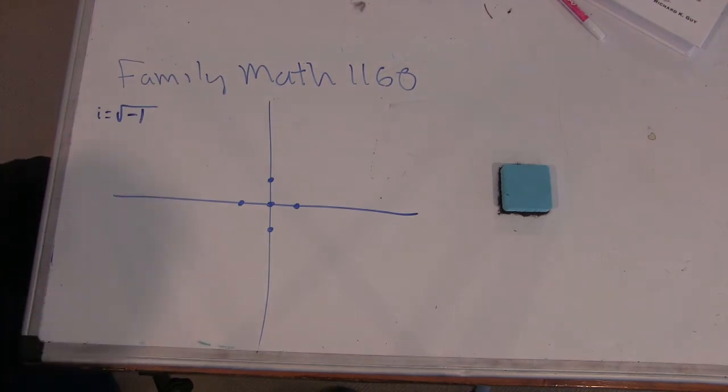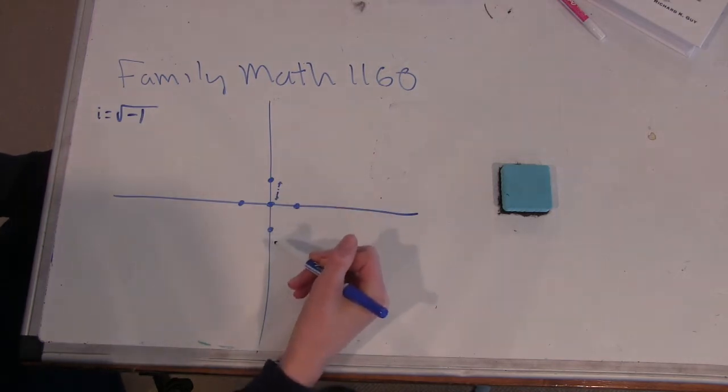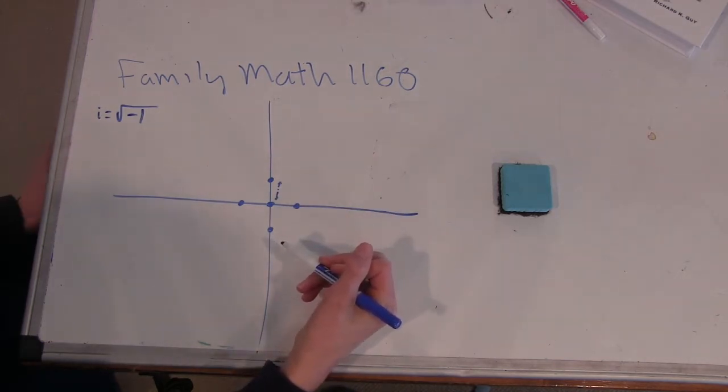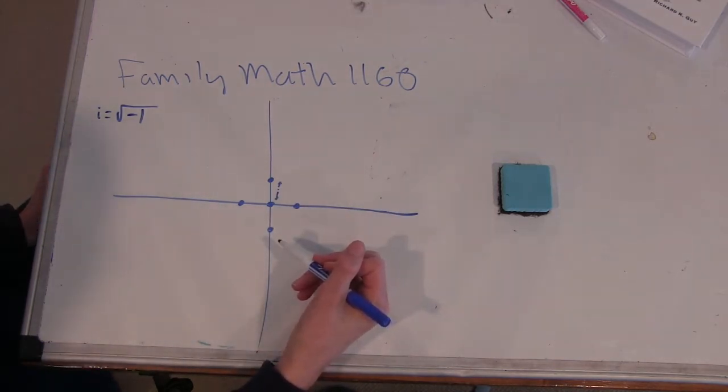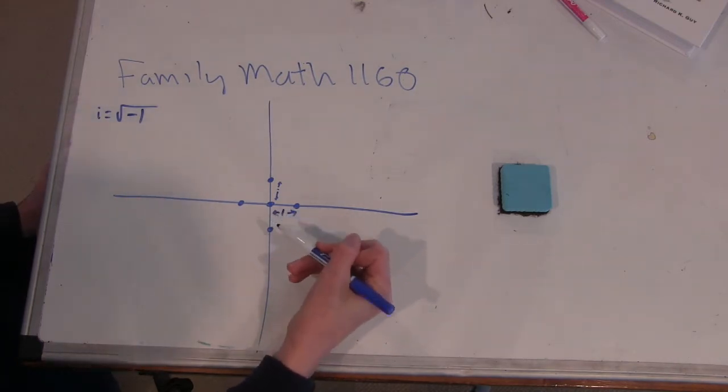Okay, so i is a new type of number we've introduced here. It has the property that i squared is minus one. And also, it's a unit. So that's a good thing that you said that.